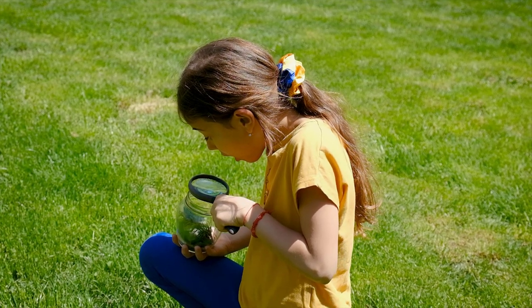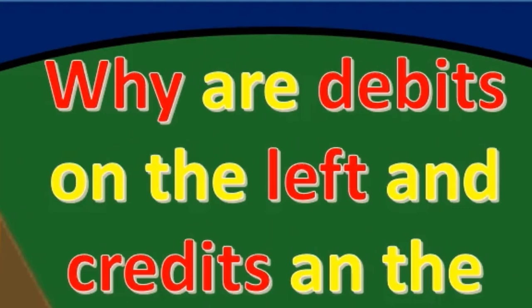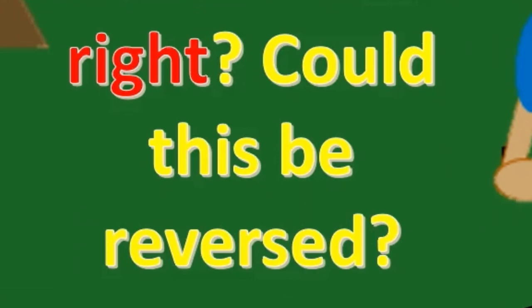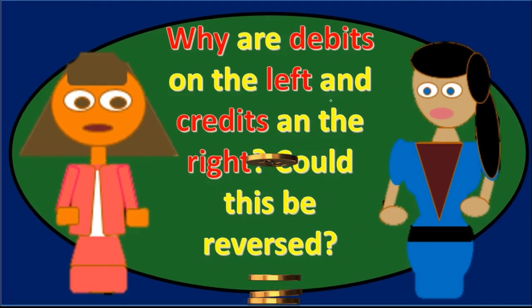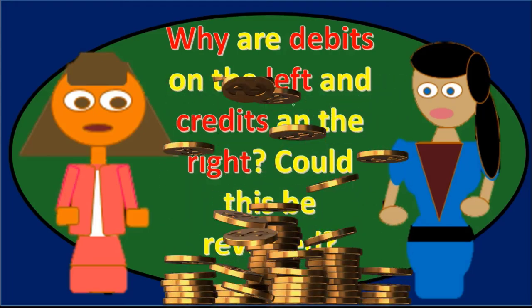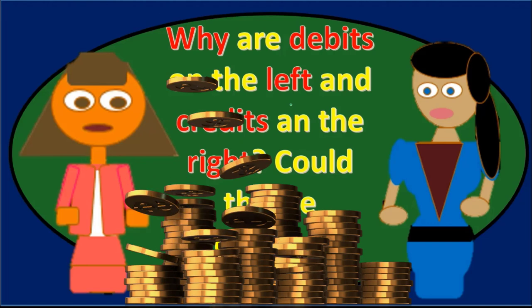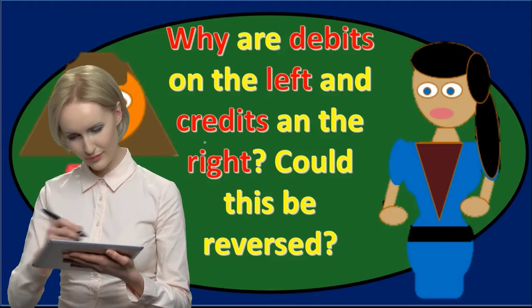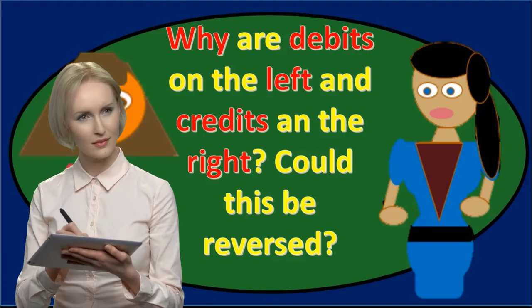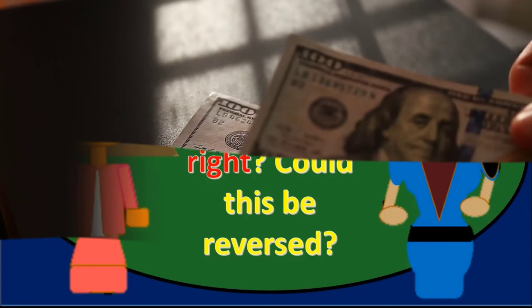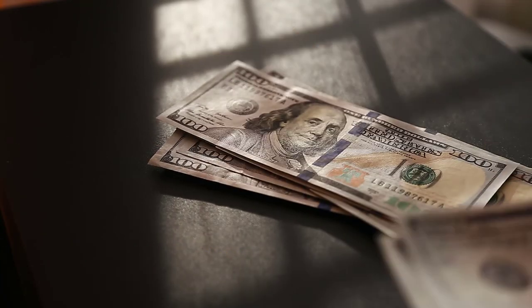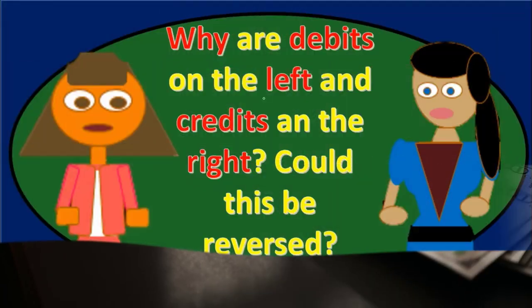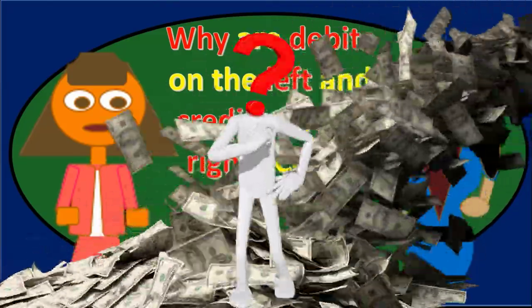We know that assets have a debit normal balance, liabilities have a credit normal balance, equity has a credit normal balance, revenue has a credit normal balance, and expenses have a debit normal balance. Applying the left and right rule: if we debit an asset account, we're acting on the same side as its normal balance, making it go up. If we credit an asset account, we're acting on the opposite side, making it go down. The reverse is true for liabilities — debiting a liability makes it go down, crediting it makes it go up.